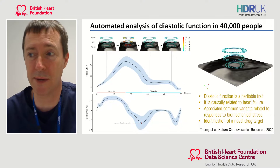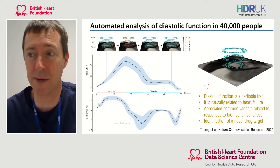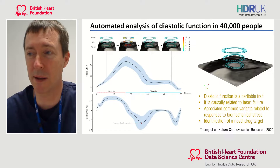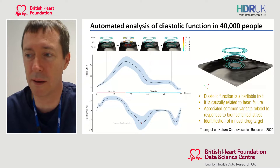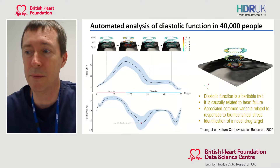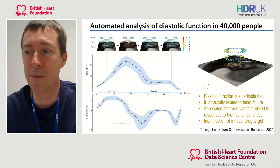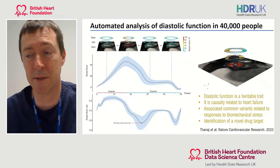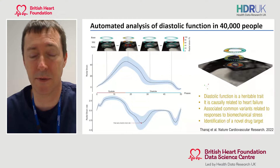Here we've analysed images from 40,000 people in UK Biobank. You can see how the computer has tracked the contours of the heart over time; the coloured areas show the strain in the heart muscle during contraction. We can also look at the way the heart relaxes. We can then look at the genotyping available in Biobank and identify the common genetic variants that explain the differences in diastolic function. This has shown up a number of genetic pathways important for how the heart responds to stress and could point us towards novel therapies for diastolic dysfunction.